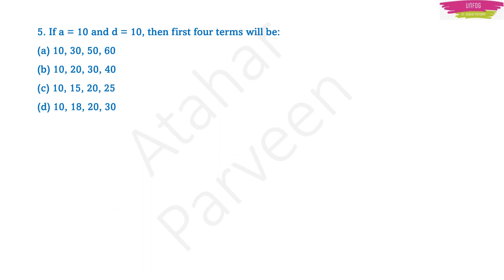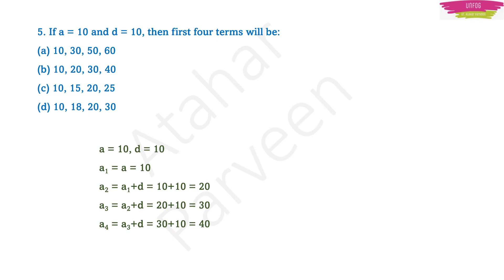Next question is from arithmetic progression. If a = 10 and d = 10, then the first 4 terms will be what? They have given the first term and the common difference, and are asking you to find the first 4 terms. The formula is: start with a₁, then a₂ = a₁ + d, a₃ = a₂ + d, and a₄ = a₃ + d. So you keep adding the common difference to get each successive term.